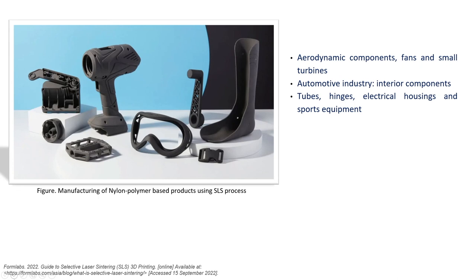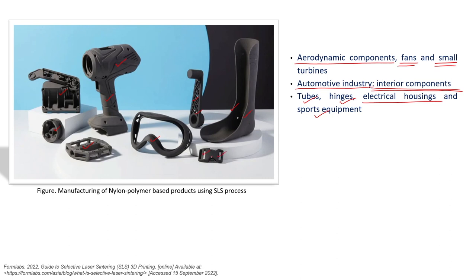In terms of materials that can be produced by SLS, the applications include aerodynamics such as fans and small turbines, automotive interior components, tubes, hinges, electrical housings, and sports equipment. On screen you can see parts manufactured by SLS — observe the complexity of these parts, their structural complexity, various features, and surface finish which is easily achievable using the SLS process. Therefore SLS is very common and widely used in the industry.